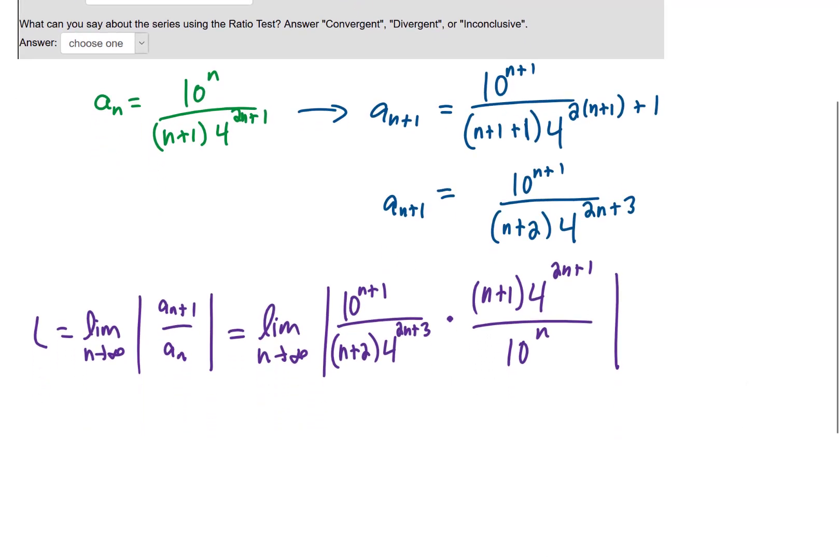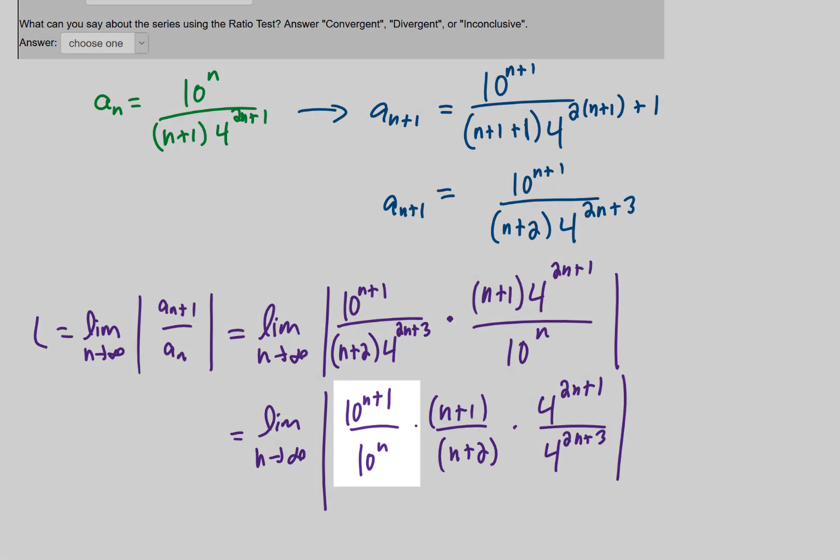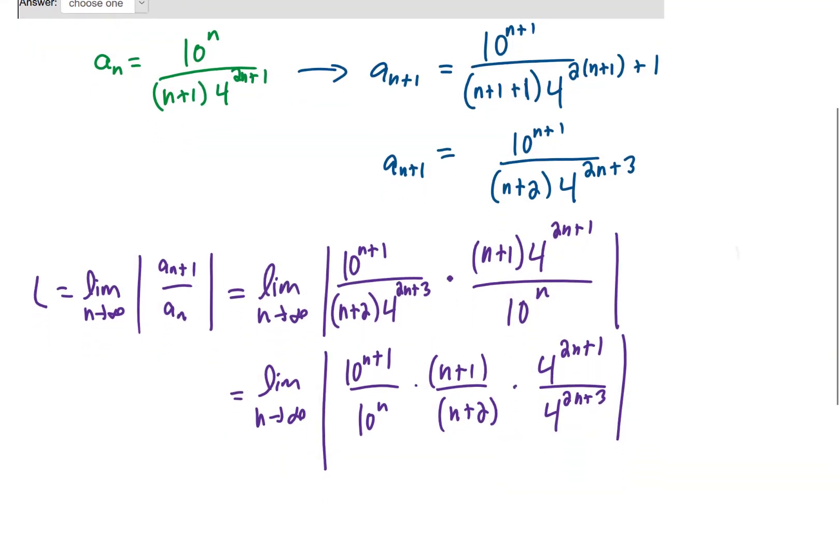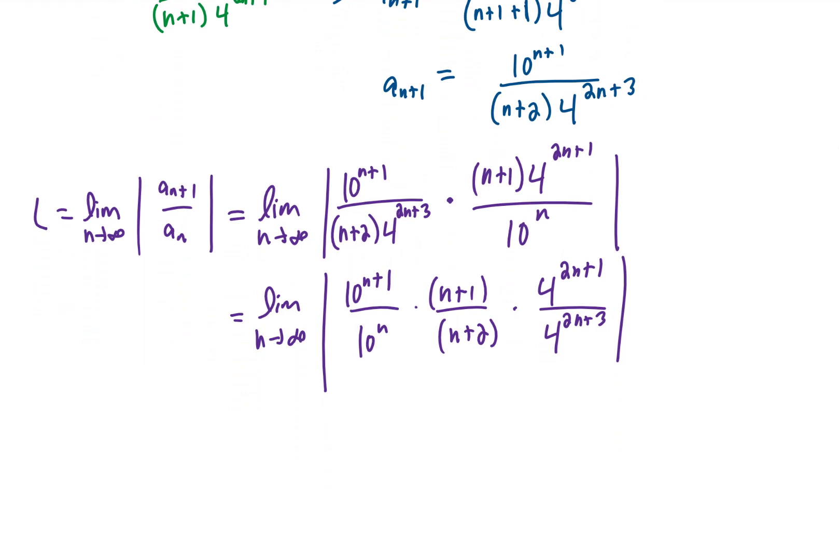Now I'm going to order things up a little bit here. I'm just grouping similar terms, not doing any algebra here. Now this first term, 10^{n+1} divided by 10^n. The 10^n in the denominator is going to cancel with 10^n in the numerator, and that's just going to leave us with a factor of 10 in the numerator. Our (n+1) over (n+2) does not cancel at all.